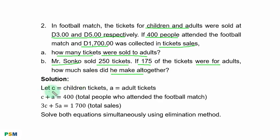Solution. Let C represent children's tickets and A adult tickets. From the question, the total number of children and adults who attended the match was 400: C plus A equals 400. Then total sales: 3C for children plus 5A for adults equals 1,700. This equation represents total sales.